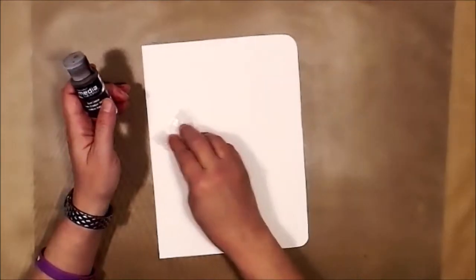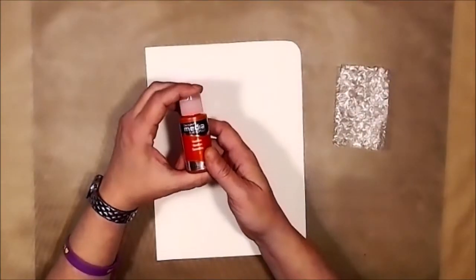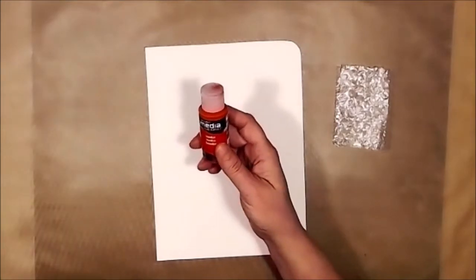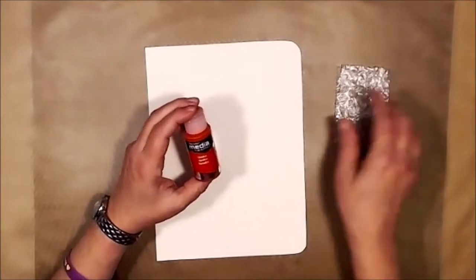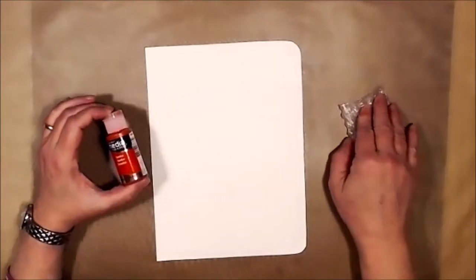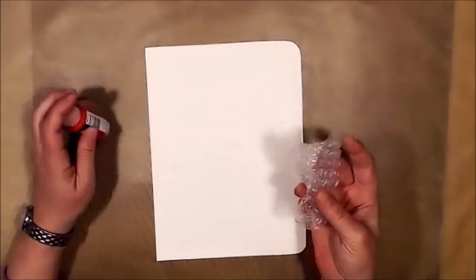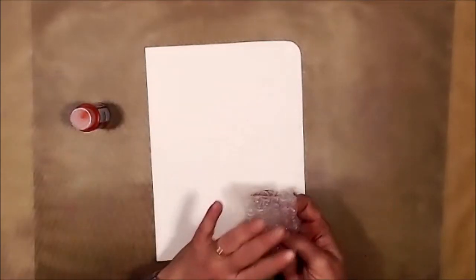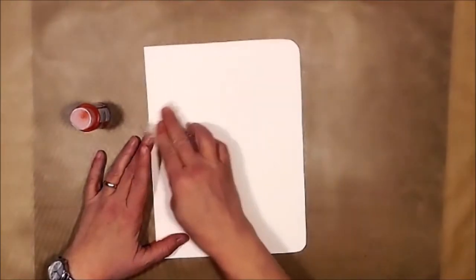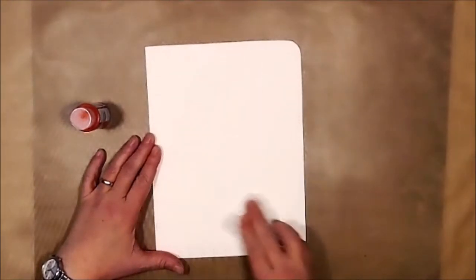Then after that dried, I went back with the burnt umber and put a little bit more of that just to bring that color up a little bit. So then after that dried, I came in with vermilion by Deco Art. These are fluid acrylics, by the way, in the Deco Art media line.